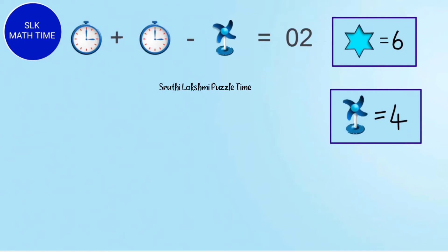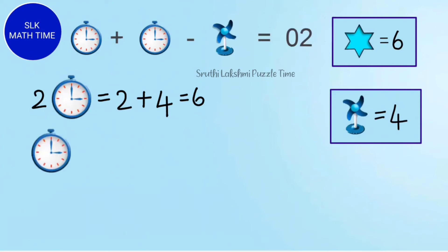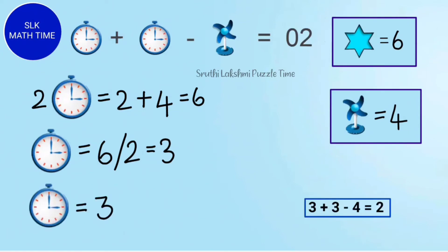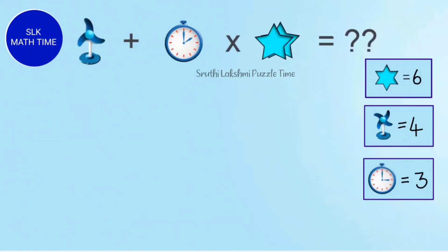So now we know that the value of fan is 4. When this minus 4 goes to the other side, it becomes plus 4. So next, we do 2 plus 4. 2 plus 4 is 6. So this is the value of 2 clocks. To find the value of 1 clock, let's divide 6 by 2. 6 divided by 2 is 3. So the value of 1 clock is 3. Let's substitute the values. So 3 plus 3 minus 4 is 2.